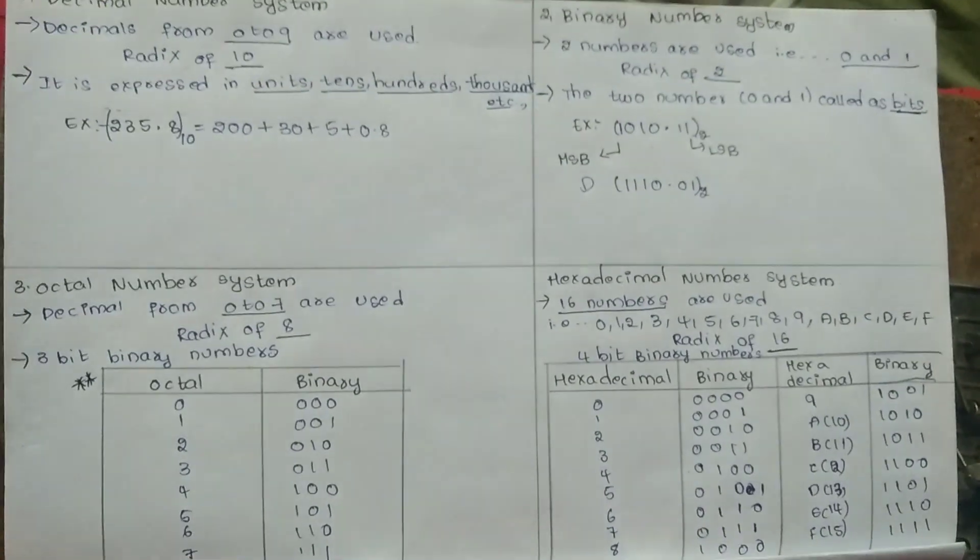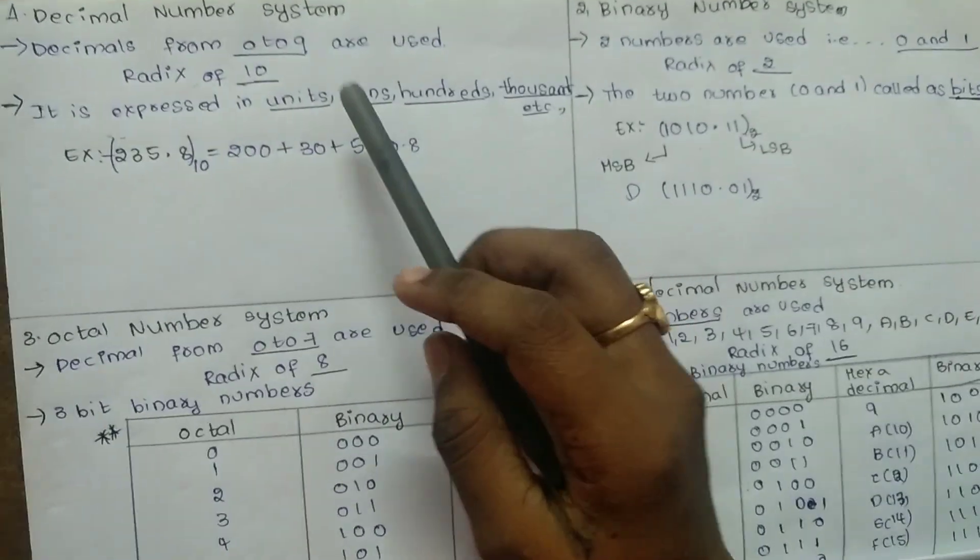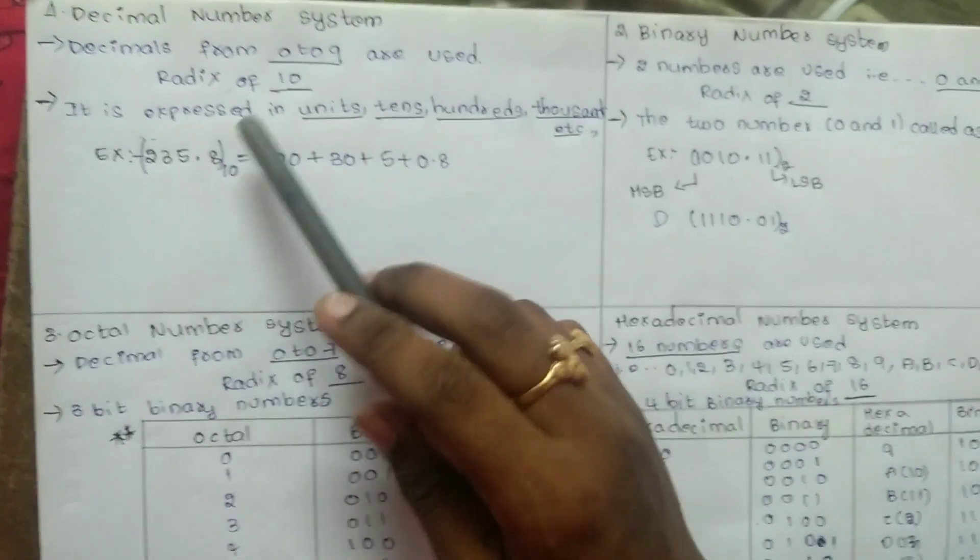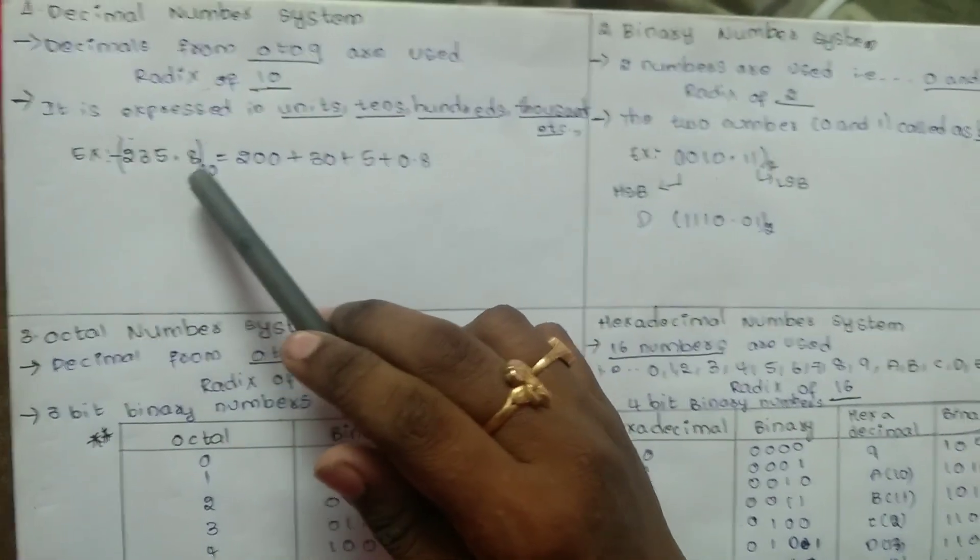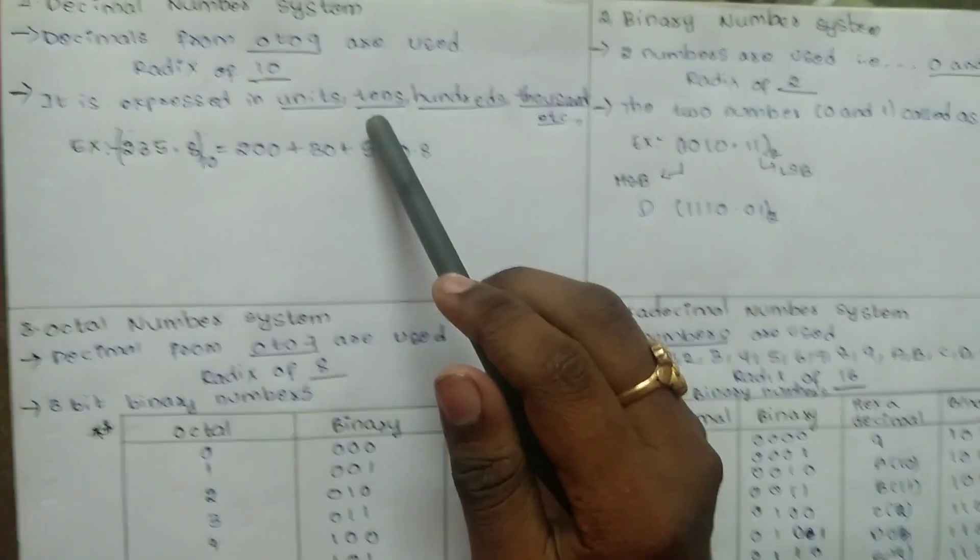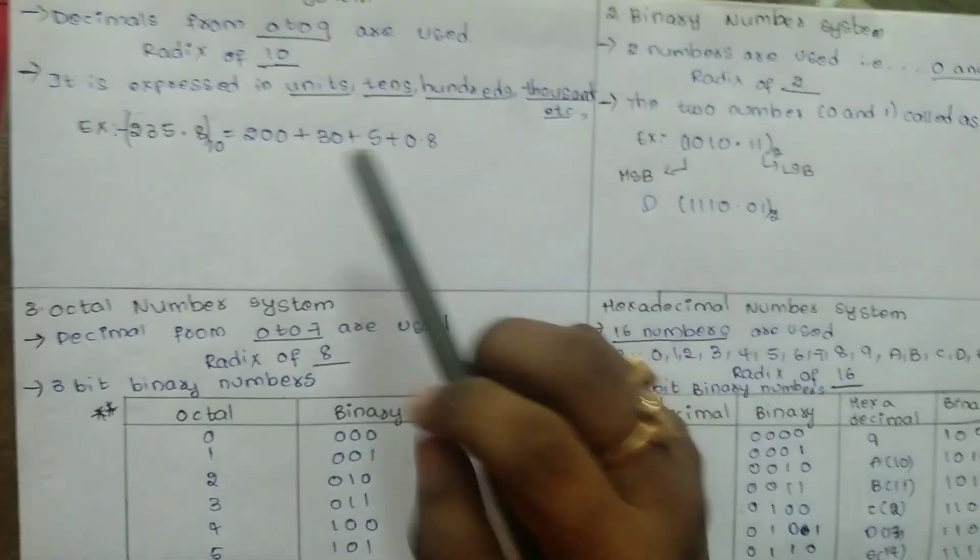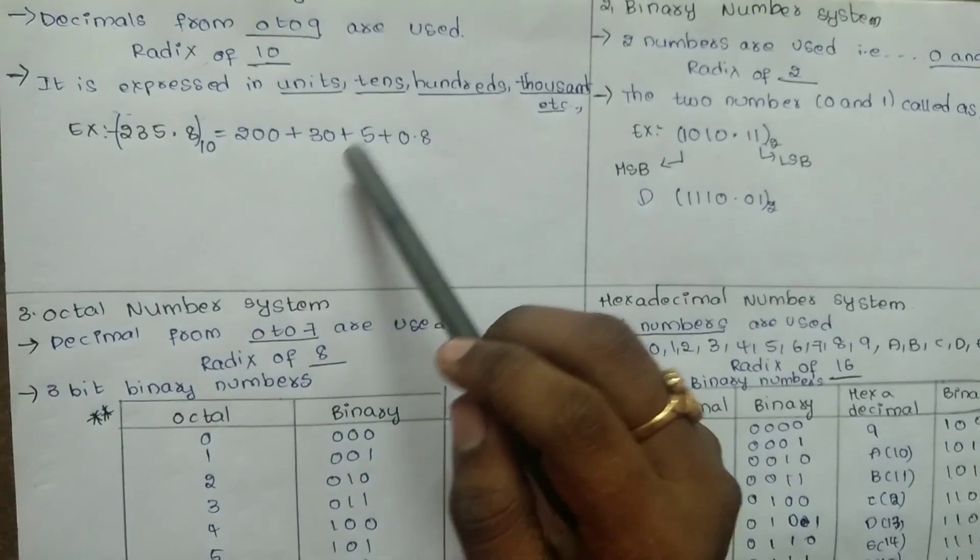Let me explain each classification in detail. First is decimal number system. Let's take an example, 235.8. It is expressed in units, tens, hundreds, thousands, etc. So we need to convert this to expression form.